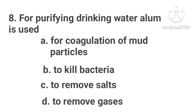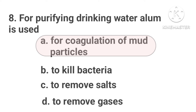For purifying drinking water, alum is used. Option A: For coagulation of mud particles. Option B: To kill bacteria. Option C: To remove salt. Option D: To remove gases. The correct answer is Option A.